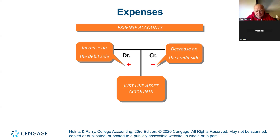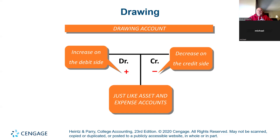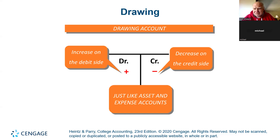Those are the five rules. We're going to look at one more which I won't emphasize much, but we've got to know. This one deals with drawings. It's important to keep the owner's personal financial affairs separate from the company. So we have something called drawing, and drawing reduces equity.